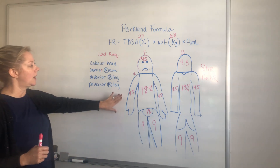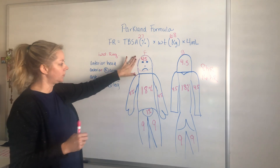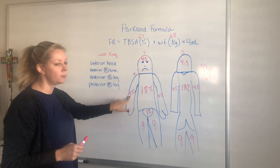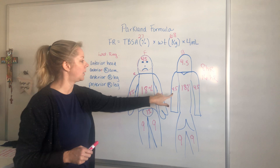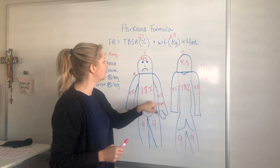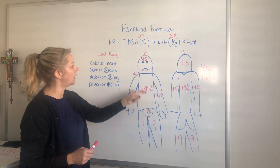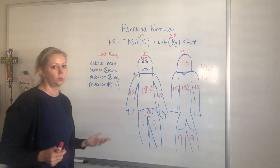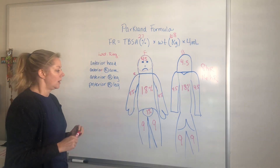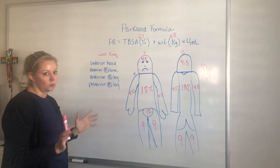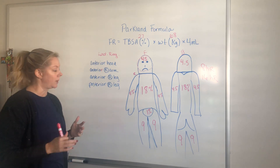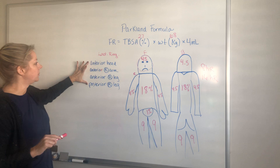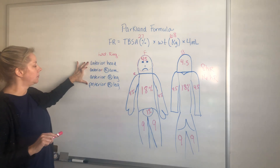This is the rule of nines, and the reason it's called that is: the arm front and back equals nine, the other arm equals nine, half of the torso is nine, that's nine, and the whole head is nine. So that's why it's called the rule of nines — determined by research to calculate total body surface area.